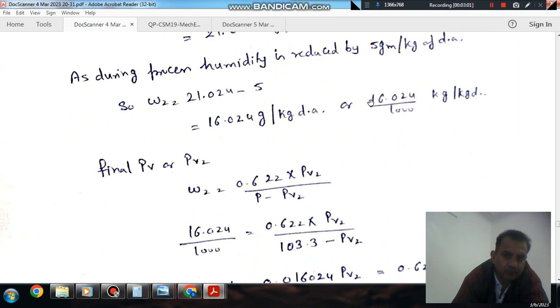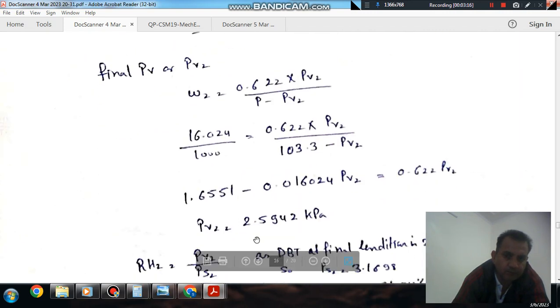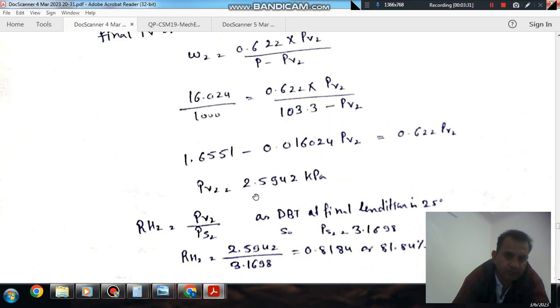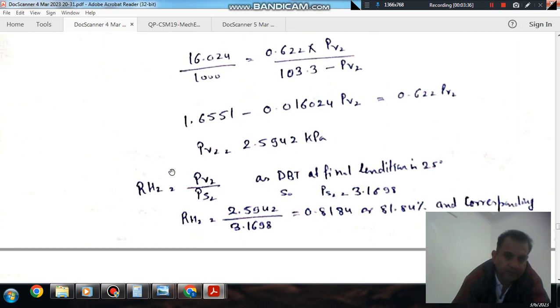Now we have specific humidity and we will again use the formula for specific humidity. That is, omega 2 is equal to 0.622 PV2 divided by P minus PV2. Now we have P, we have omega 2. You can find out PV2, so PV2 comes out to be 2.594 kPa.